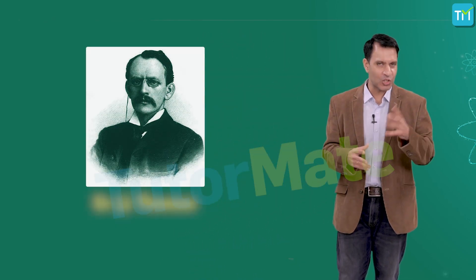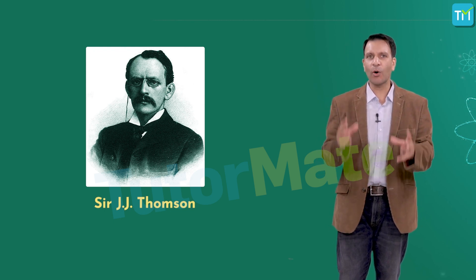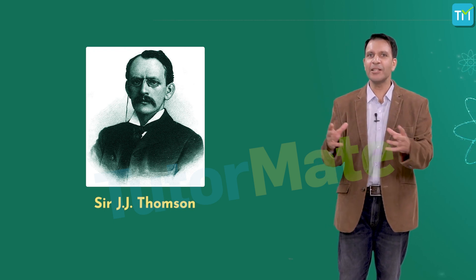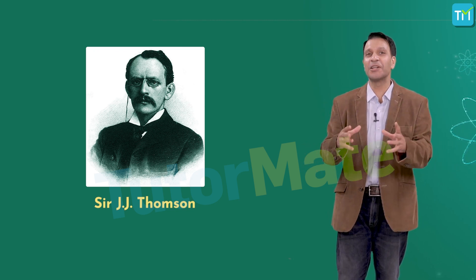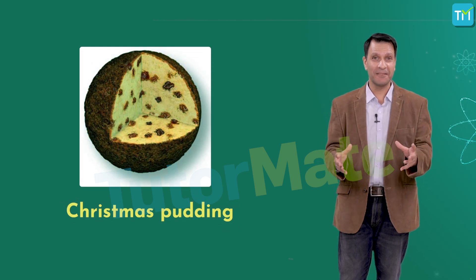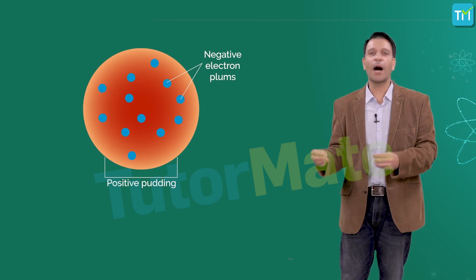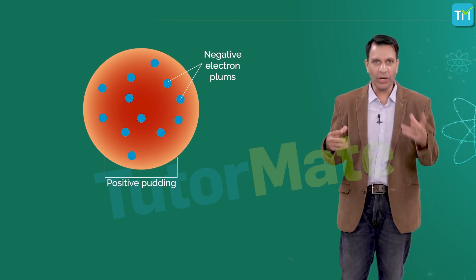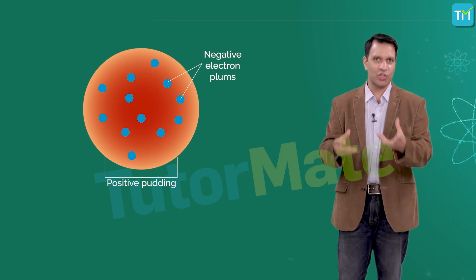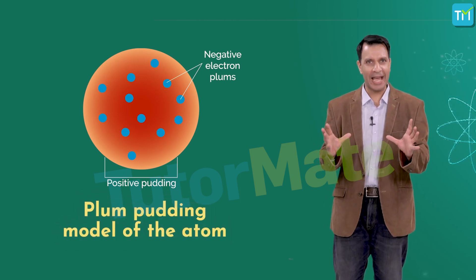The first attempt to describe the internal structure of an atom was made by Sir J.J. Thomson. He proposed that the atom was similar to a Christmas pudding — or what came to be known as the plum pudding model. He stated that negatively charged electrons needed a positive charge to balance them out, so they were surrounded by positively charged material.